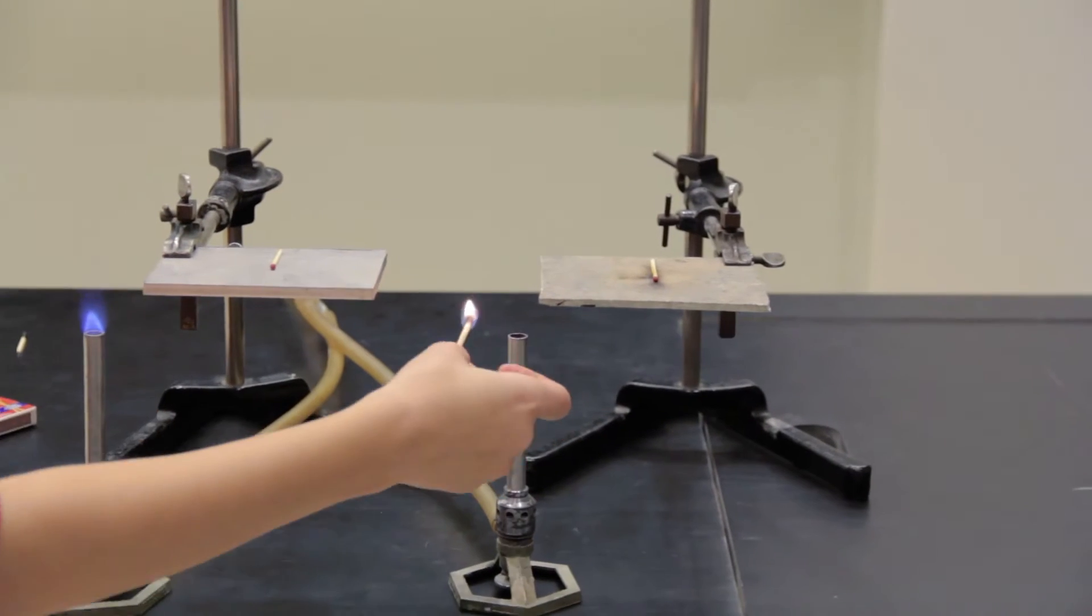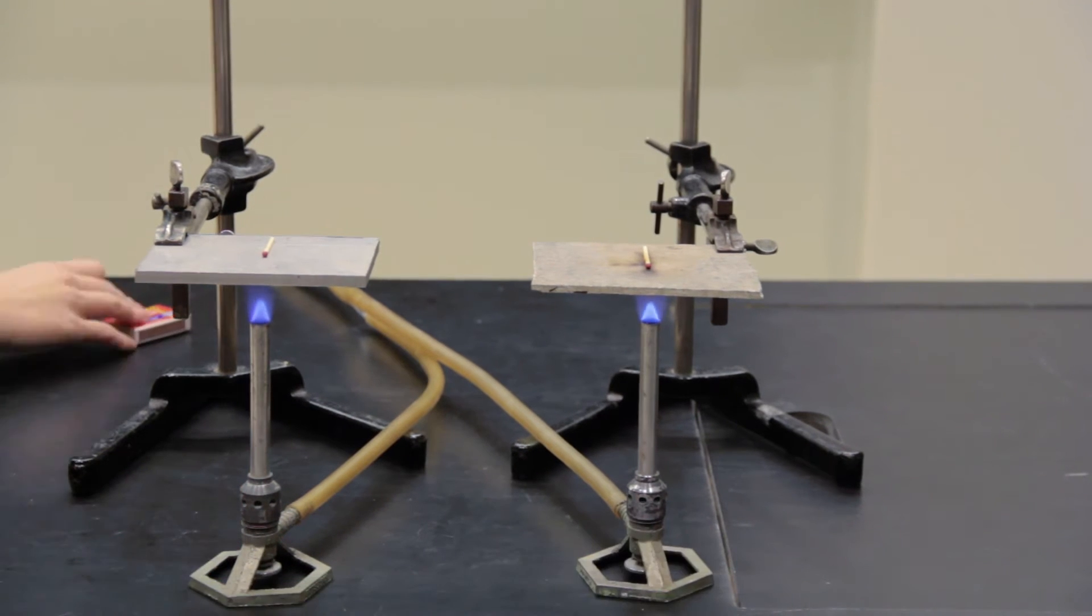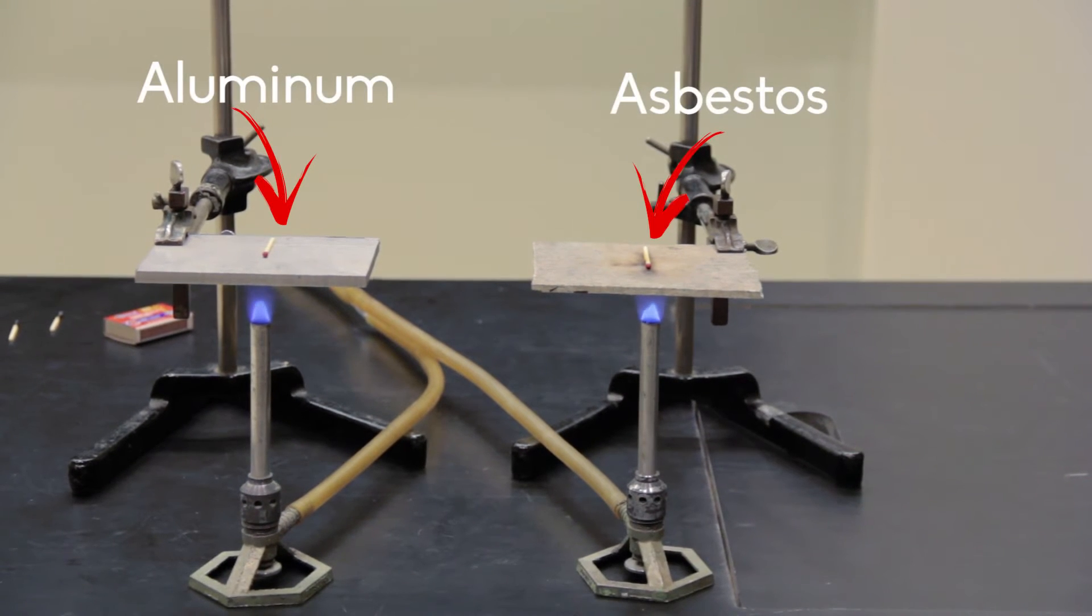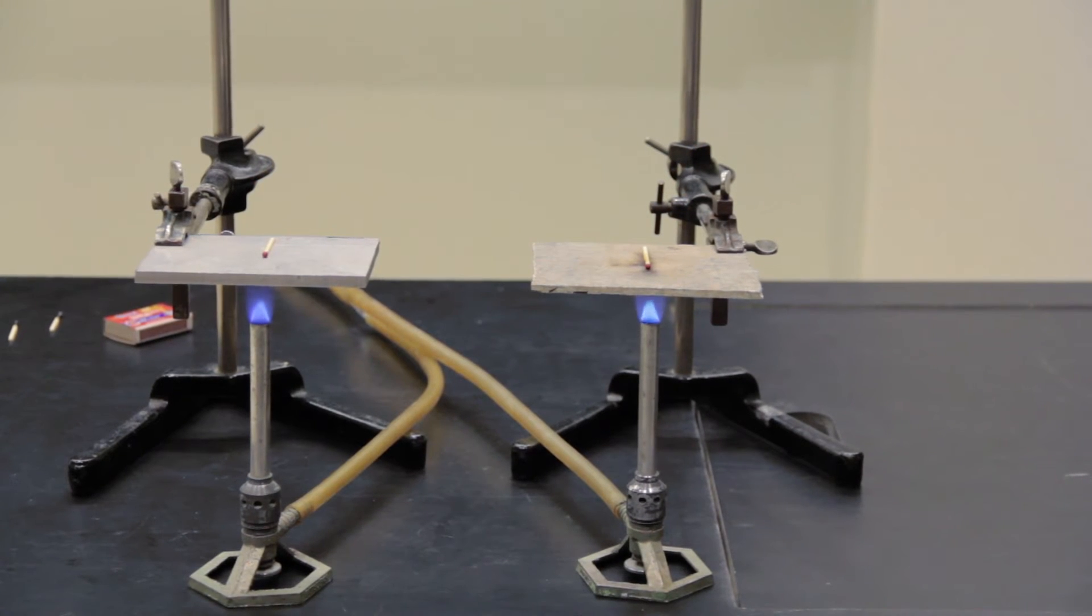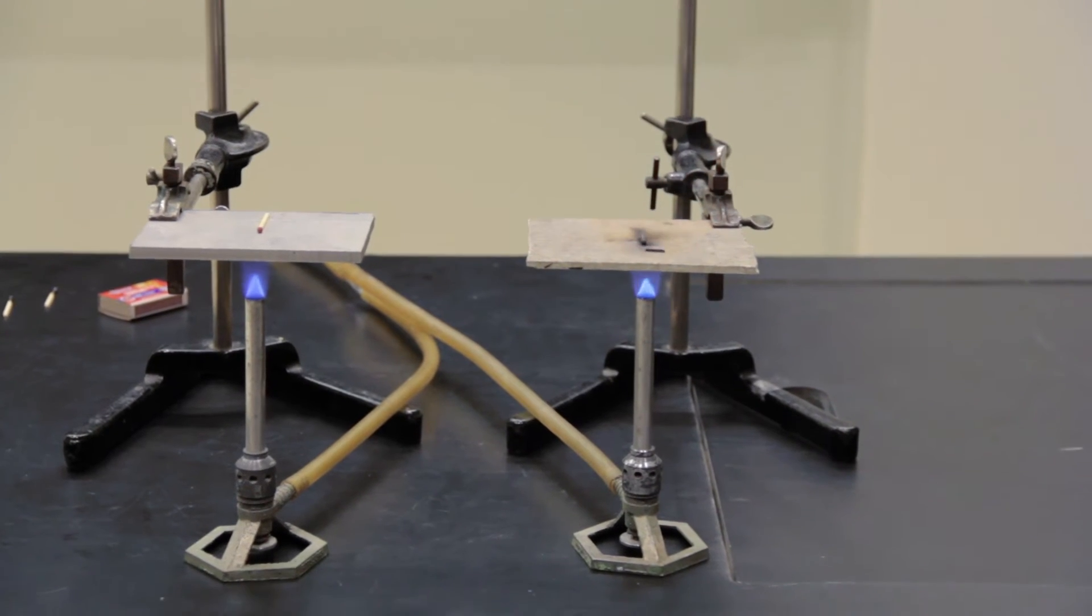We will speed up the frame rate and see that the match on the slab of asbestos lights in about a minute of time, while the match on the aluminum will take much longer. That may seem a little counterintuitive. Since asbestos is an insulating material, shouldn't heat move less efficiently through it? Yes, but heat is also carried away from the flame location less efficiently in asbestos as well.